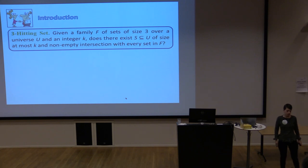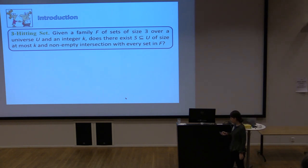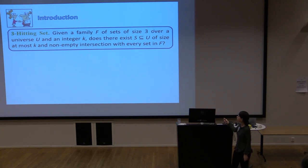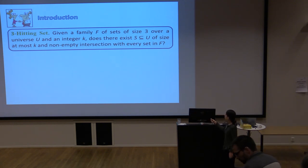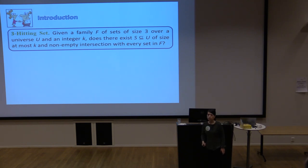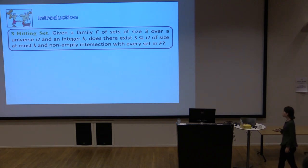So let me define the problems we studied. We looked at problems that can be cast as special cases of either a 3-Hitting Set or 3-Set Packing. In 3-Hitting Set, we are given a family F of sets of size 3 over some universe U and an integer K, and we ask whether we can pick a subset S of the universe of size at most K such that it hits one of the sets in the family, i.e., has a non-empty intersection with each set in F.